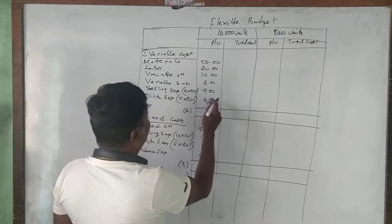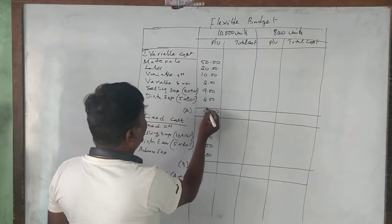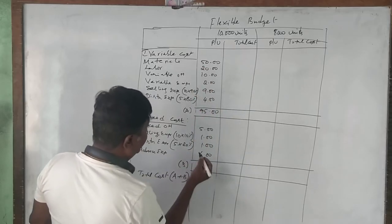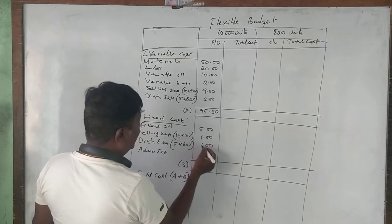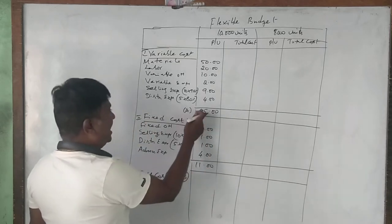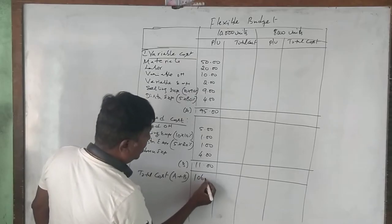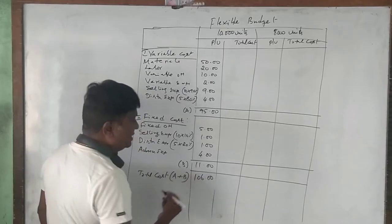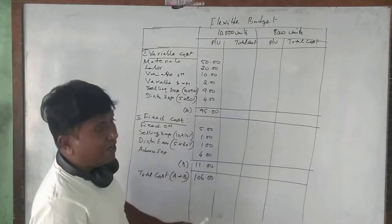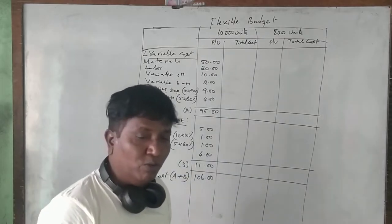Total variable cost per unit: 50 + 20 + 10 + 2 + 9 + 4 = 95 rupees. Total fixed cost per unit: 1 + 1 + 5 = 11 rupees. So 95 plus 11 is 106 rupees total cost per unit.